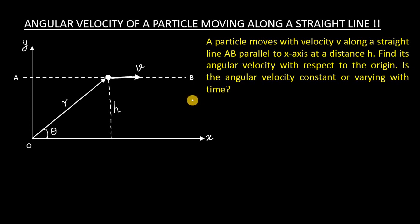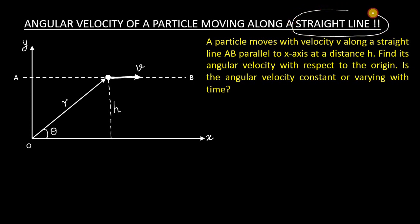Hello students, here is a very interesting question: angular velocity of a particle moving along a straight line. Up till now we suppose that angular velocity means circular motion. But here there is no circular motion — the particle is moving along a straight line. Can a particle have angular velocity while moving along a straight line?